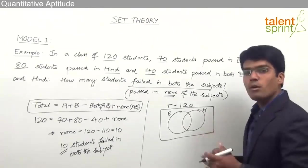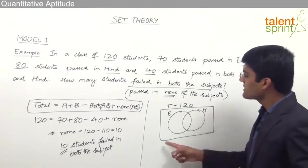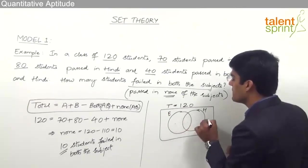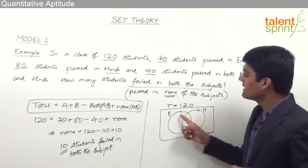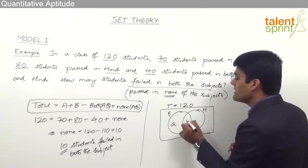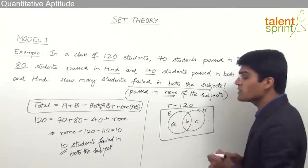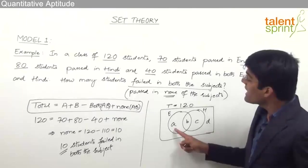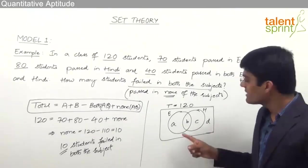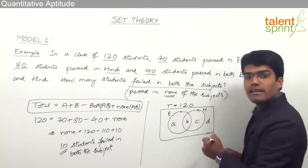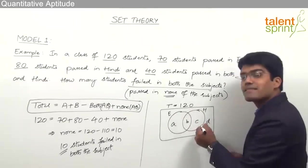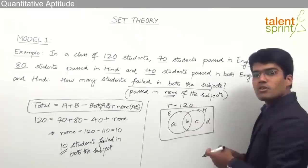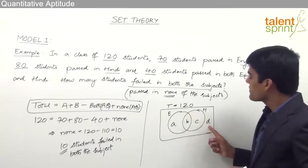The universal set is 120 and we have two subsets. When filling values into the four regions — A, B, C, and D — region A is students who passed only in English, B is students who passed both English and Hindi, C is students who passed only in Hindi, and D represents students who passed in none of these subjects. The number who passed in English is A plus B; who passed only in English is just A. The number who passed in Hindi is B plus C; who passed only in Hindi is C. Students who passed in both is B, and students who failed in both is D.